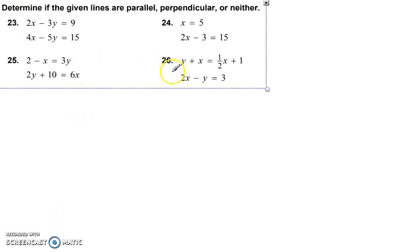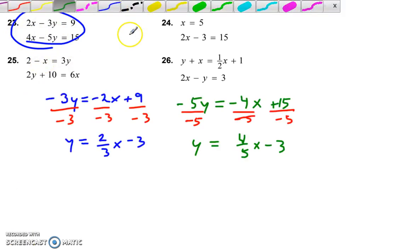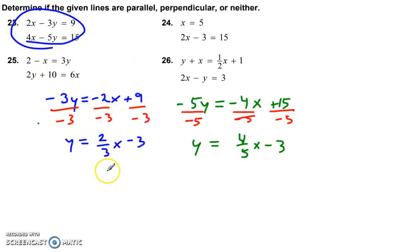To determine if they're parallel, perpendicular, or neither, put them in slope intercept form. So we'll move these over. Let's see. Let's see. I'll do number 23 here. And after putting them in slope intercept form, I'm going to inspect their slopes and see are they the same or are they opposite reciprocals. 2 thirds and 4 fifths are neither the same or opposite reciprocals. So neither. Okay. And we'll do the same thing for the rest of them.